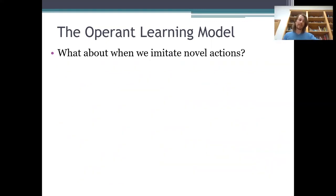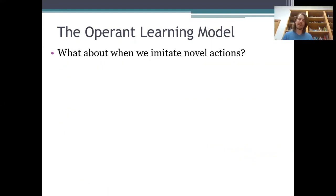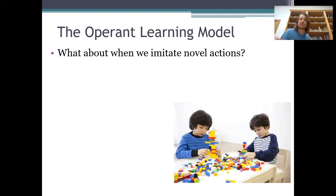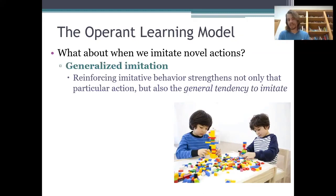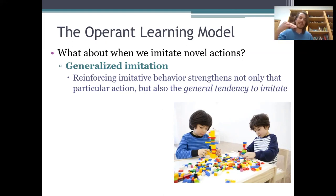Sometimes people will imitate novel behaviors that they've never been personally reinforced for performing themselves. For example, if a little boy watches his older brother build a tower of Legos, he might learn from that observation how to build his own tower of Legos, even though he's never played with Legos before and has never been reinforced for imitating that particular behavior. The operant learning model can handle cases like that if we factor in the concept of generalized imitation, which says it's possible not just to reinforce imitation of one specific action, but also to reinforce the general tendency to imitate.